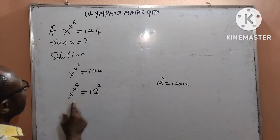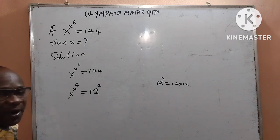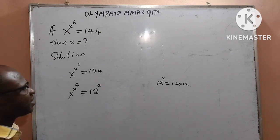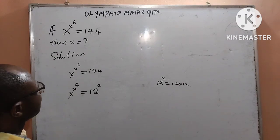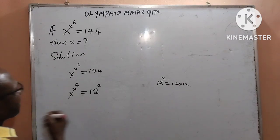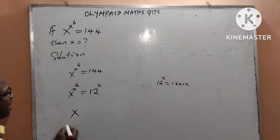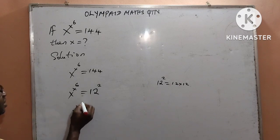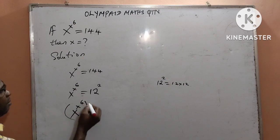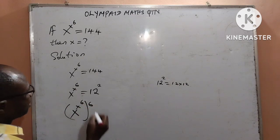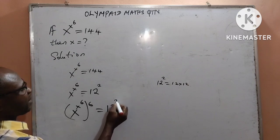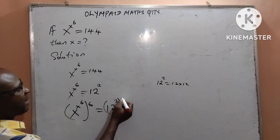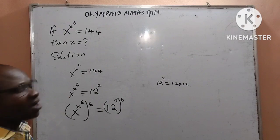Then I want to multiply the exponent — that is the power — which is 6. What does that mean? It implies that I shall be multiplying the power of 6. Therefore, by the right-hand side I do the same thing: 2 multiplied by the power of 6.